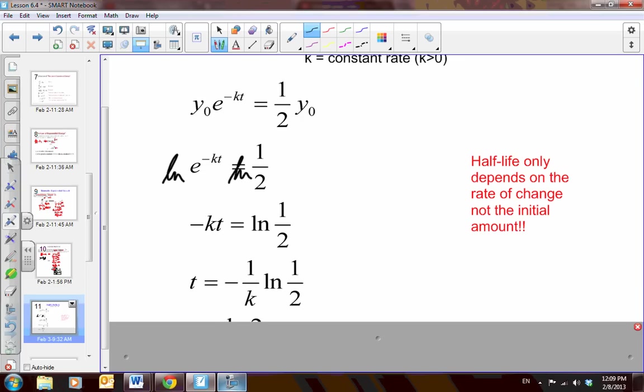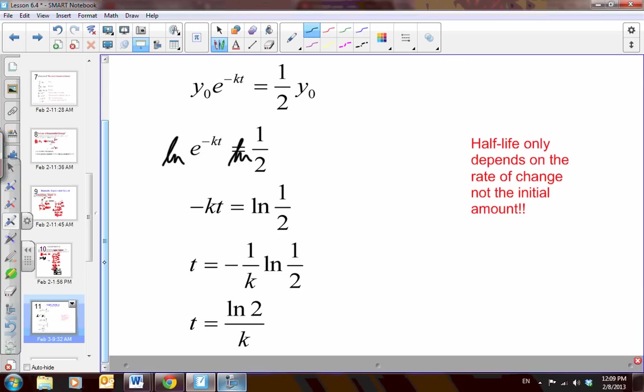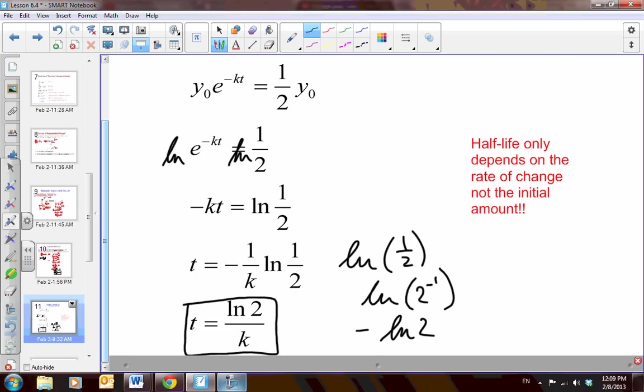And then, using our properties of logarithms that I just showed you, the natural log of 1 half is the same as the natural log of 2 to the negative 1, which is negative natural log of 2. So, we will always end up with the time is the natural log of 2 over k. Isn't that fantastic? I thought so, too.